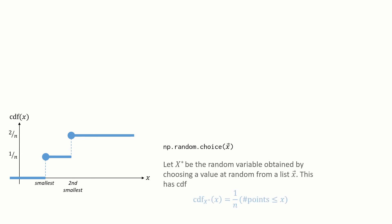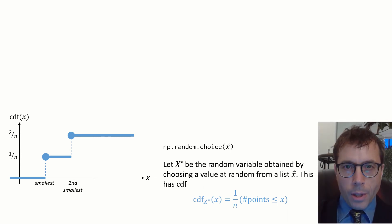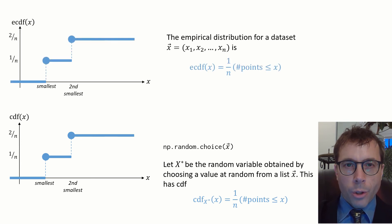Let's write that out formally. Let x star be the random variable obtained by choosing a value at random from the list. The CDF of this random variable is given by this formula here. You should recognize this formula. It's what we had in the last video.